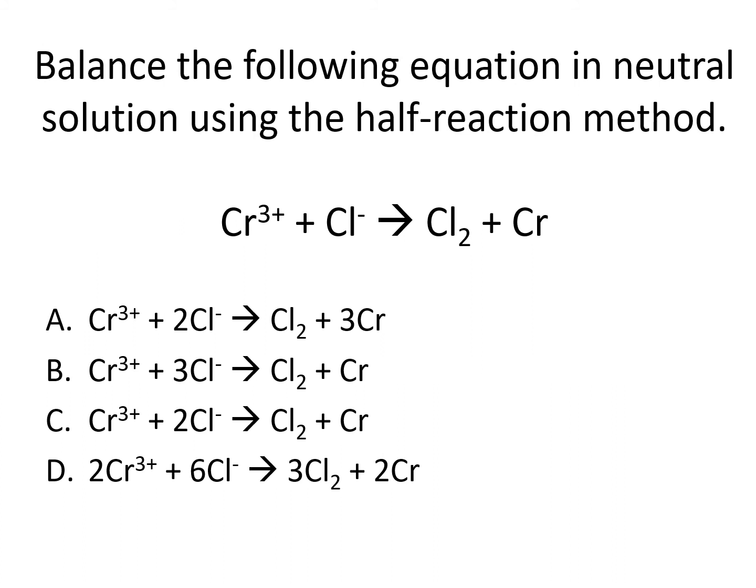Balance the following equation in neutral solution using the half-reaction method: Cr 3+ reacts with Cl− to make Cl₂ and Cr. Is the answer A, with coefficients of 1, 2, 1, and 3? B, with coefficients of 1, 3, 1, and 1? C, with coefficients of 1, 2, 1, and 1? Or D, with coefficients of 2, 6, 3, and 2?